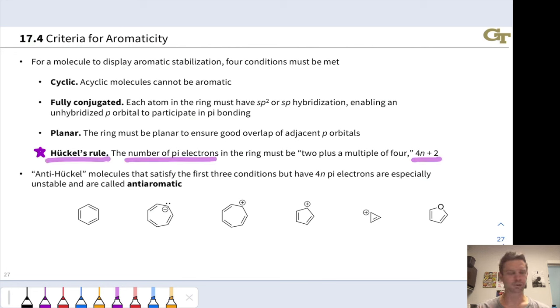A word about 4n+2 briefly here. This n value has no physical significance. It's just a counting number to help us recognize these allowed numbers, or aromatic numbers of pi electrons within a cyclic, fully conjugated system. So 2, 6, 10, 14, these are all 4n+2 numbers where n is an integer: 0, 1, 2, 3, etc. So n has no physical significance. It's just used for the math to recognize the Huckel numbers of pi electrons.